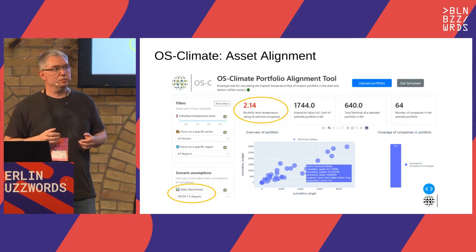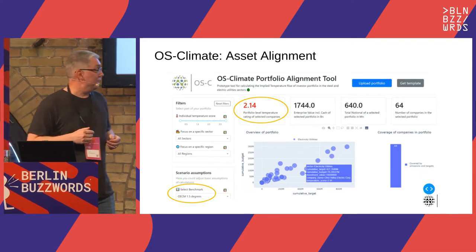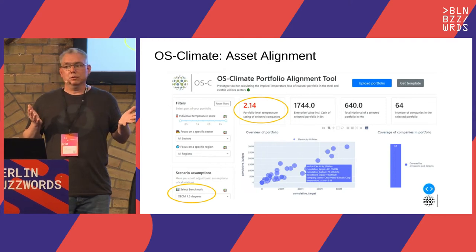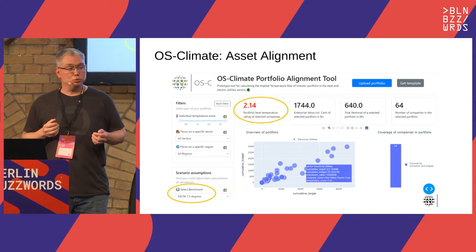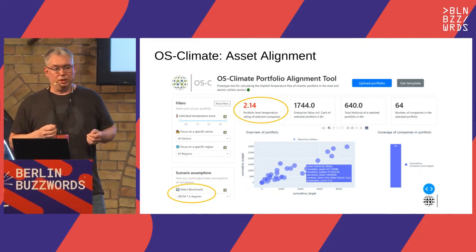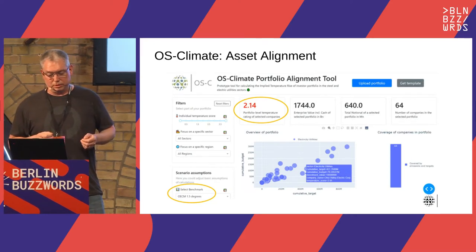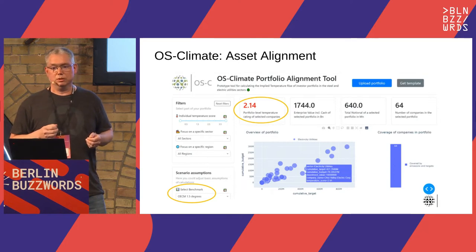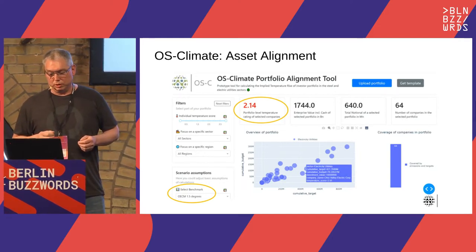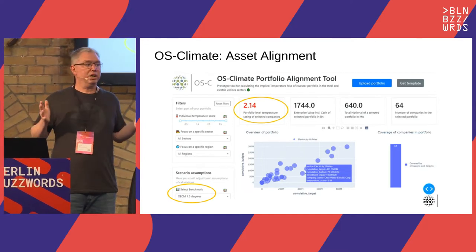In terms of applications, probably the single key application currently is in the realm of what's called asset alignment or portfolio alignment. This is the process of saying: suppose I'm a firm designing or selling some kind of mutual fund or investment product, and I either need to report or customers want to know how well aligned all the companies in this portfolio are with the goal of controlling temperature rise. You can see down here in the bottom left, I selected a target of 1.5 degrees temperature rise — a target you've probably heard in the news. And you can see above that this particular investment product is only targeting around 2 degrees, so it would not be meeting that target.